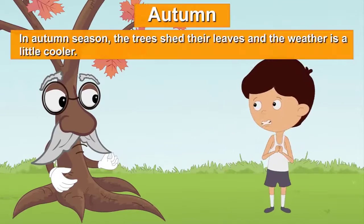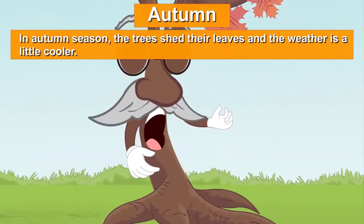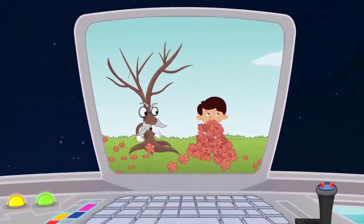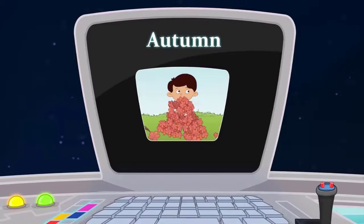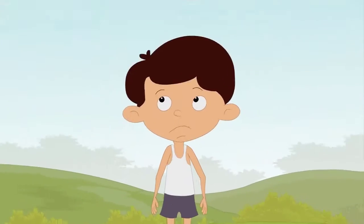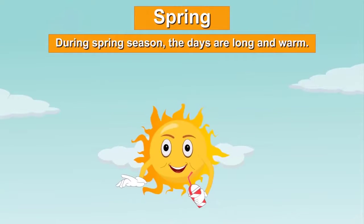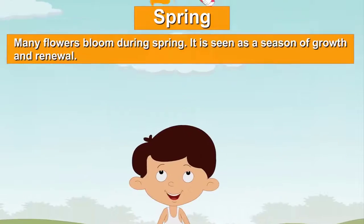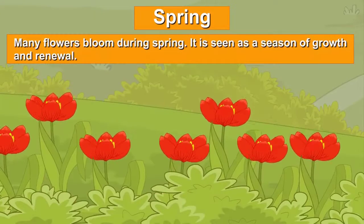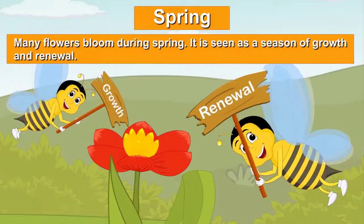In autumn season, the trees shed the leaves and the weather is a little cooler. While during spring season, the days are long and warm. Many flowers bloom during spring. It is seen as a season of growth and renewal.